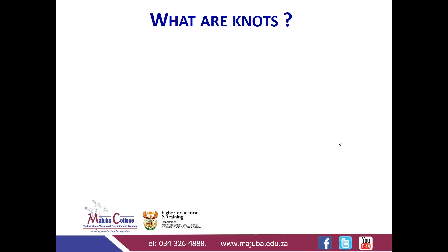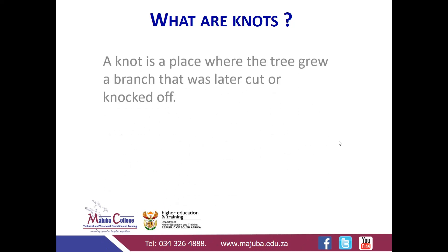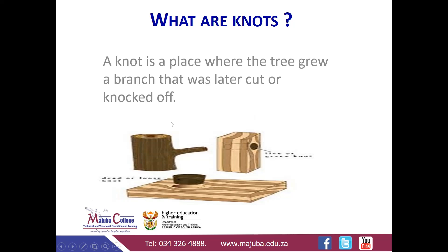The question is: what are knots? Students, you must be able to give a proper answer to this question. A simple answer will be: a knot is a place where the tree grew a branch that was later cut or knocked off. What does it look like before and after sawing? It looks like this — when you look at this, this is your log. When you cut this branch and you saw it to the timber shape, you will come up with something like this.